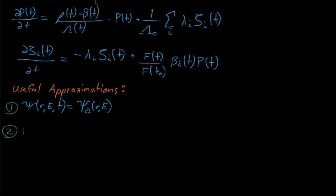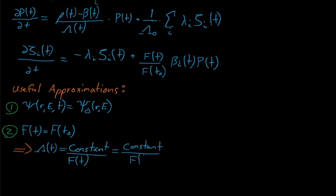Next, we'll assume that the adjoint-weighted fission operator doesn't change significantly over time and that it is well represented by the initial fission source. If the flux shape doesn't change much over time, then it makes sense that the adjoint-weighted fission source shouldn't change much either. This assumption has ramifications on the time-dependent neutron generation time, which again equals a constant divided by the f(t) term. By assuming that the flux and adjoint-weighted fission source terms don't change significantly over time, this means that our lambda also remains constant.